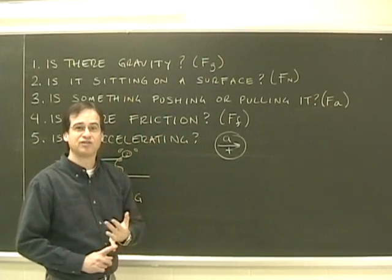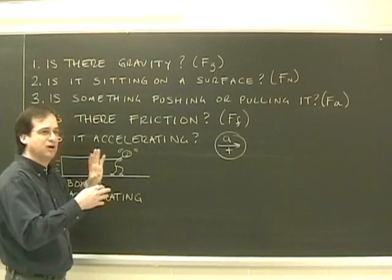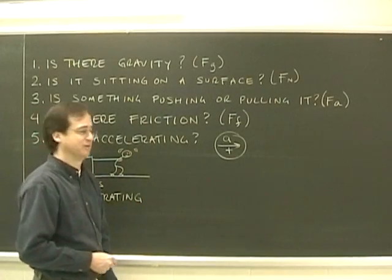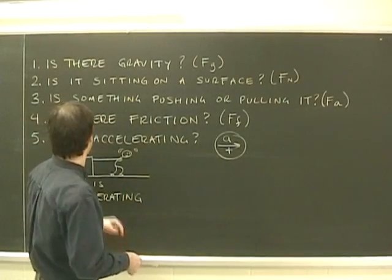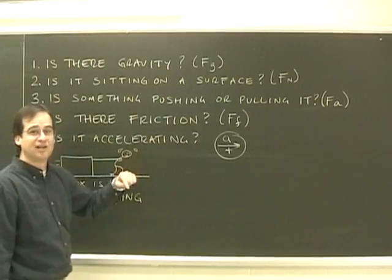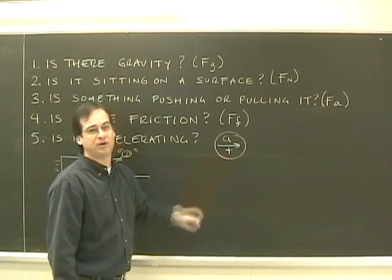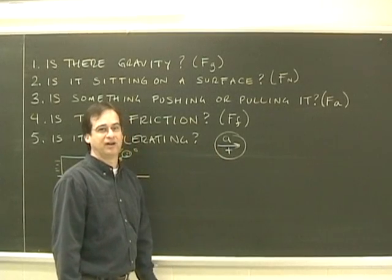We'll either say there's friction, or you might have to put friction on it to account for what the object is doing. So that might take a little bit of work. The fifth question is, is it accelerating? And you need to label which way it's accelerating, and give me that symbol there.